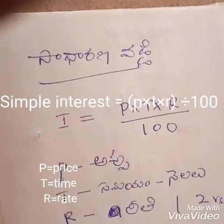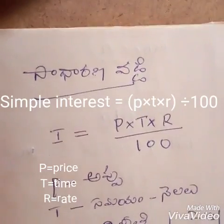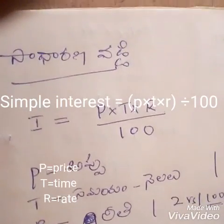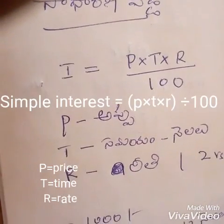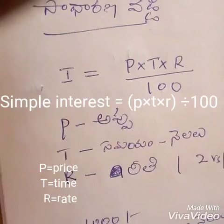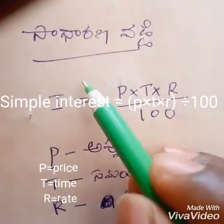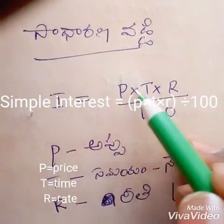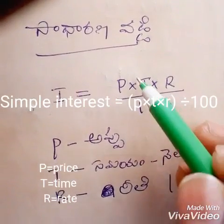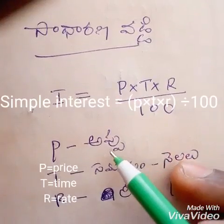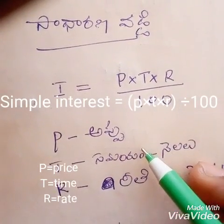I am gonna use the file just simple form. The file is called the formula: I is equal to PTR by 100. P is the principal, T is the time.